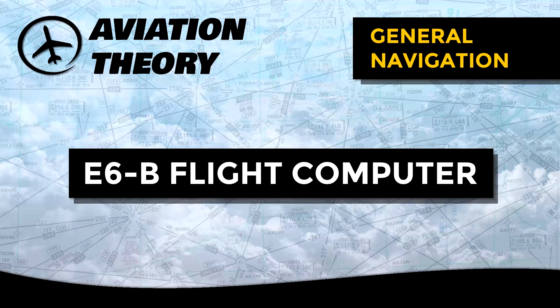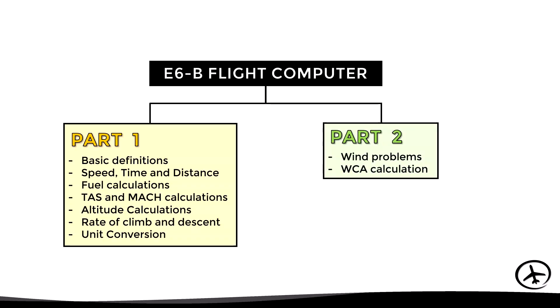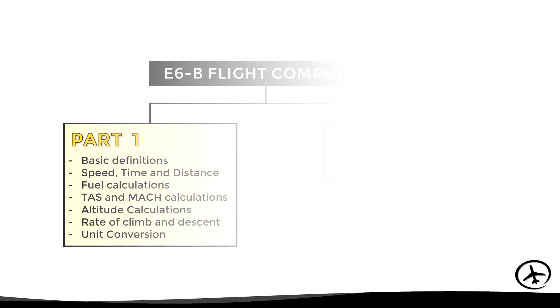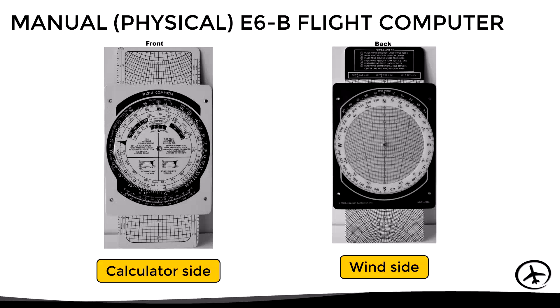Today we will see the second part about the EE-6B flight computer, since as we mentioned in the previous video, this topic was divided into two parts. In the first part, we discussed how to use the calculator side of the computer to solve different problems. In this second part, we will look at how to use the wind side of the computer to solve navigation problems related to the effect of wind, which includes the calculation of the wind correction angle. The manual or physical flight computer has two sides: the calculator or front side, which we talked about in detail in the previous video, and the wind or back side, which we will focus on in this video.